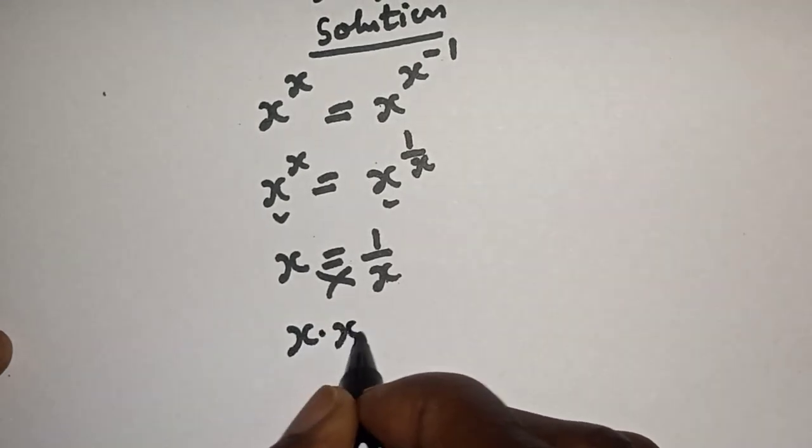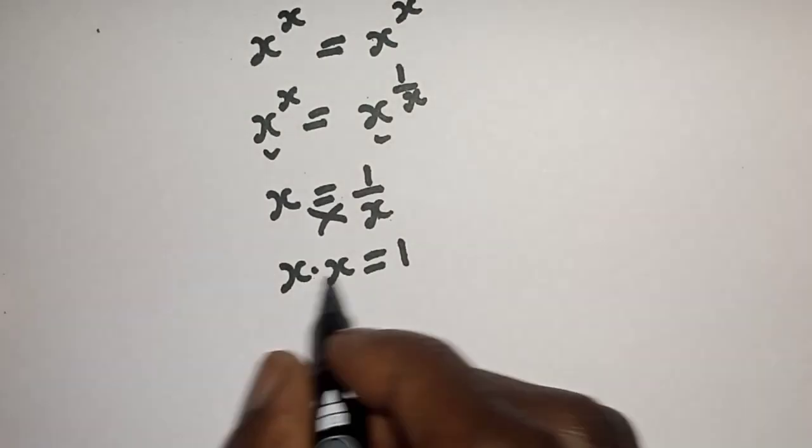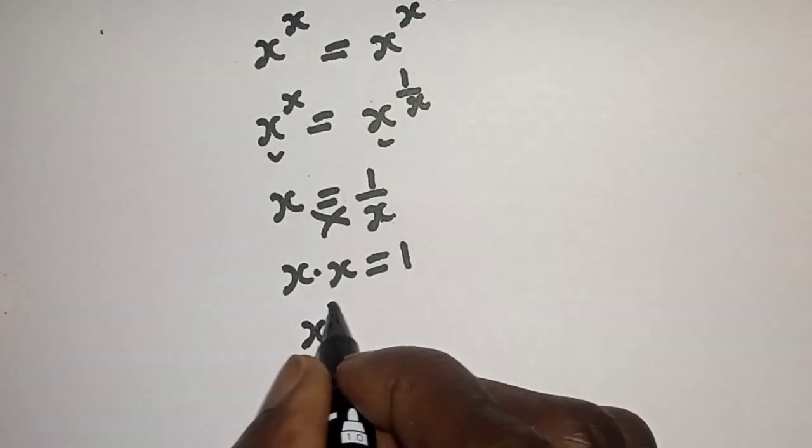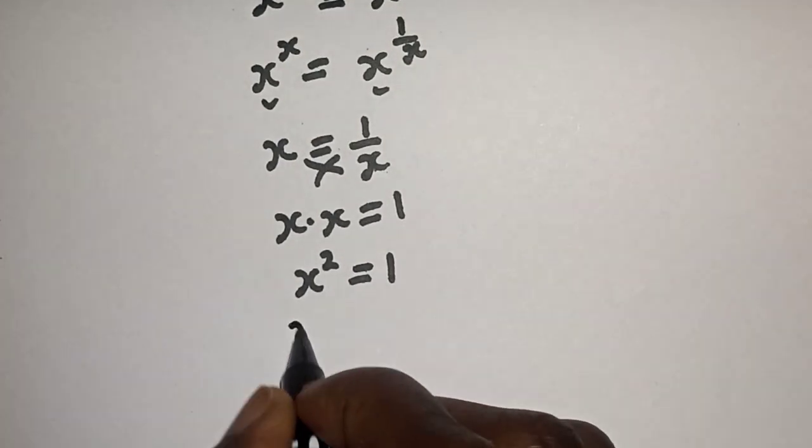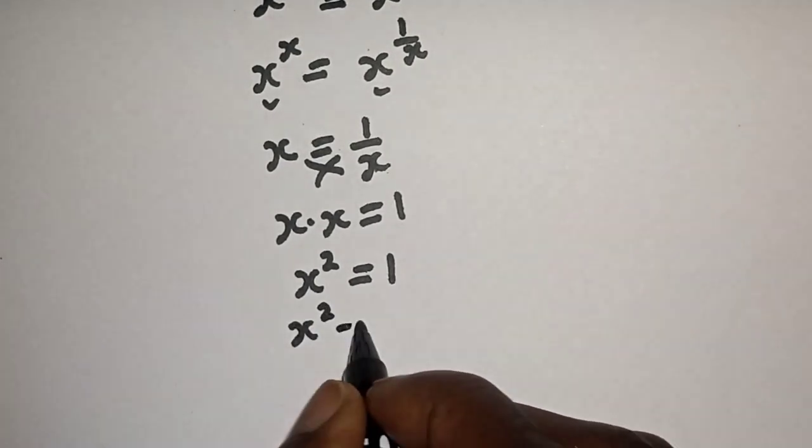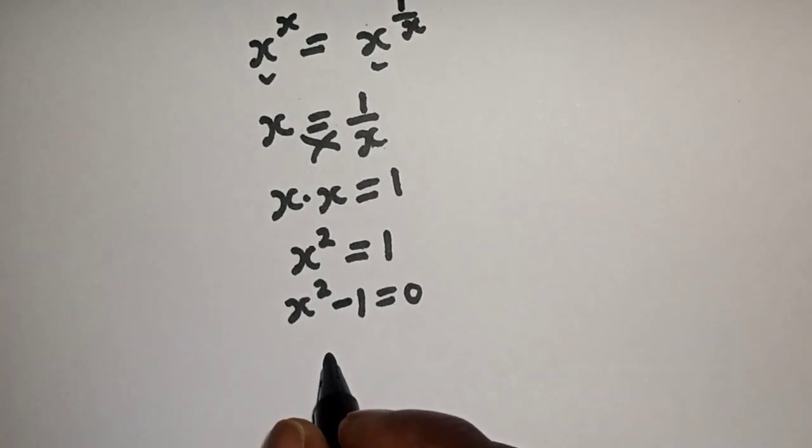S multiplied by s is equal to one. S square is equal to one. Let's bring this one to this side. S square minus one is equal to zero. Then take note of this exponential rule.